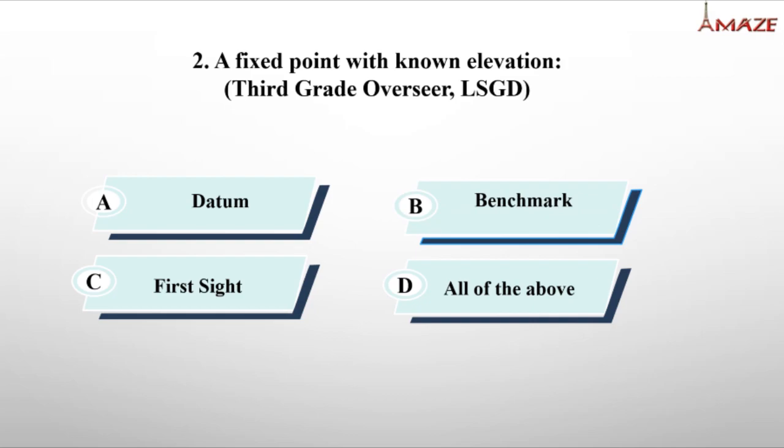Now we study types of leveling. Direct leveling uses a level instrument with a spirit level. Indirect methods include trigonometric leveling, barometric leveling, and hypsometric leveling. In trigonometric leveling, horizontal distance and vertical angle are used to calculate vertical distance — that is indirect.